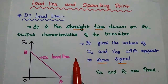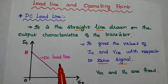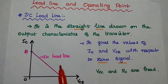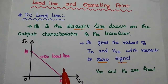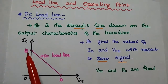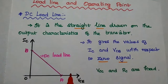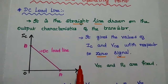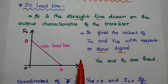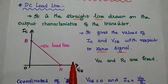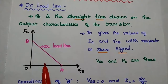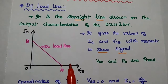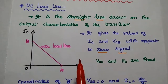We can consider the CE transistor circuit. In this, the output parameters are collector current and collector-emitter voltage. We are going to draw the DC load line on the output characteristics of the CE transistor circuit.